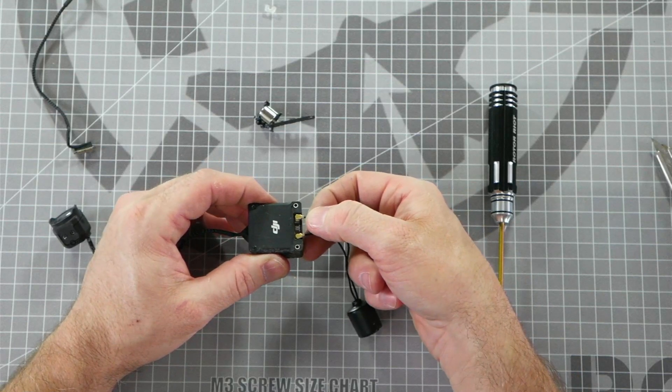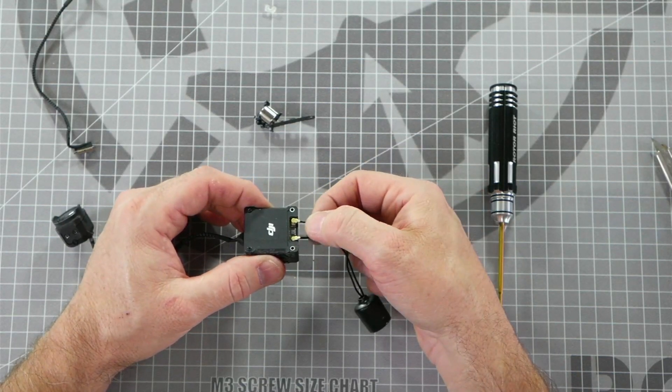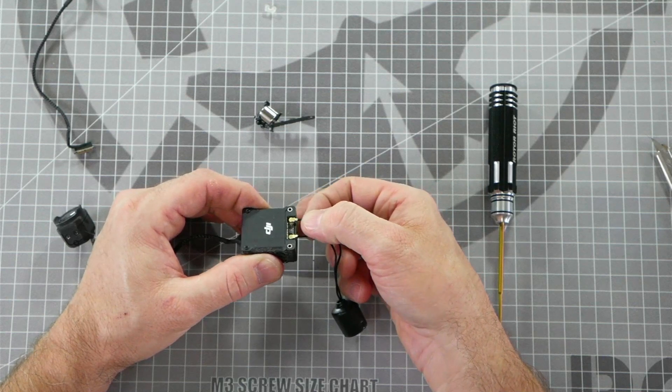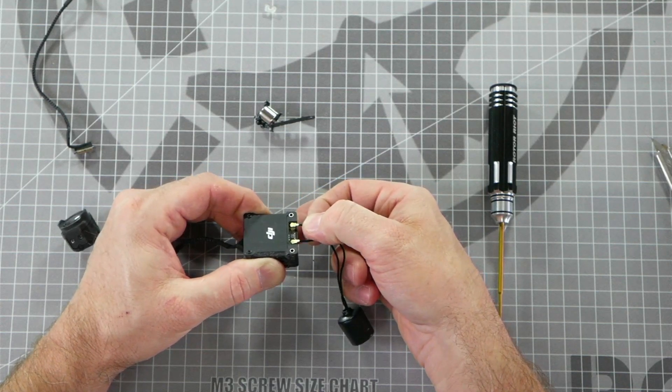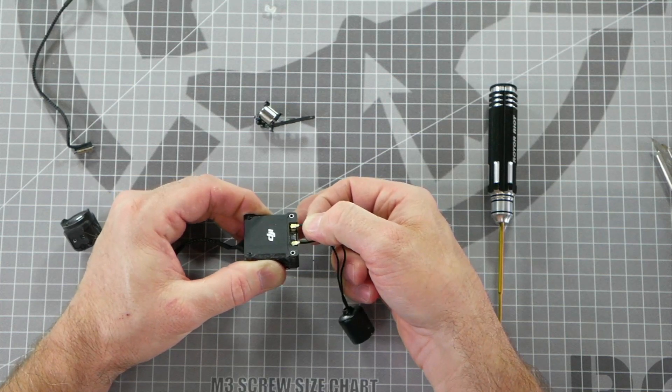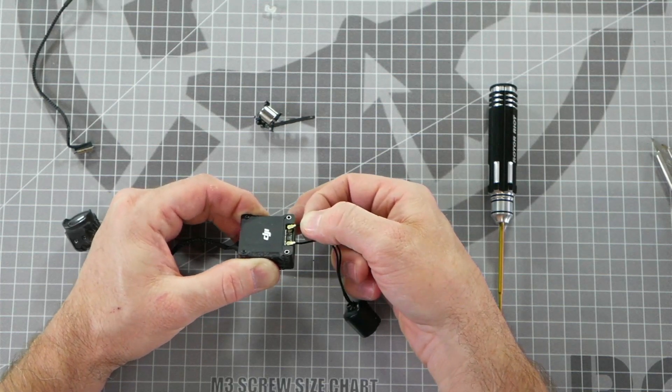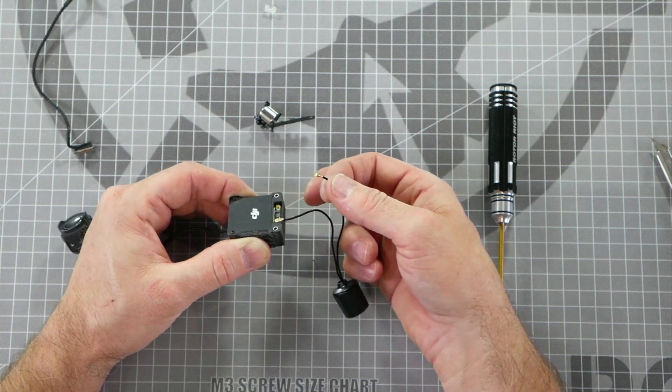When you do it, try to use a rocking motion. You don't want to yank the UFL connector off the circuit board, so just gently bend up on the cable and rock it back and forth like this to loosen it up, and eventually it should pop right off just like that.